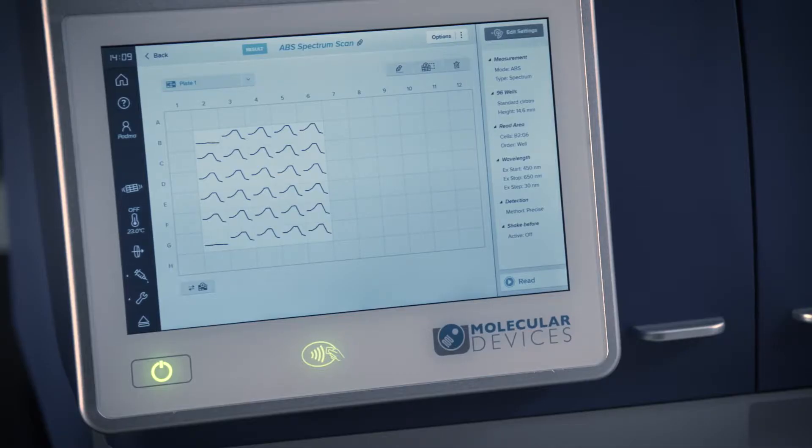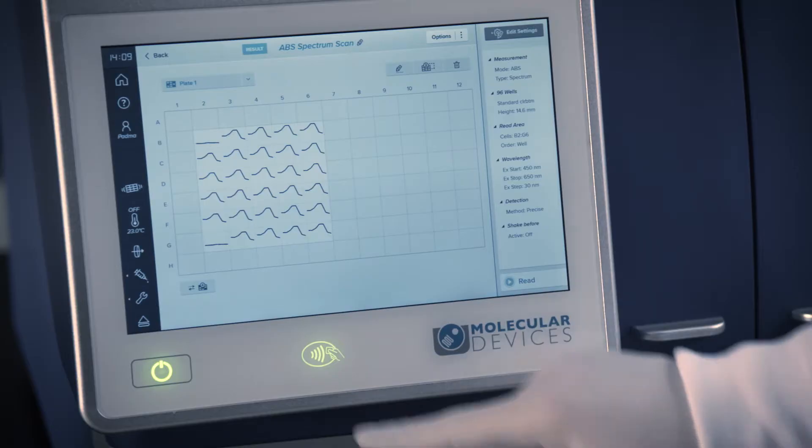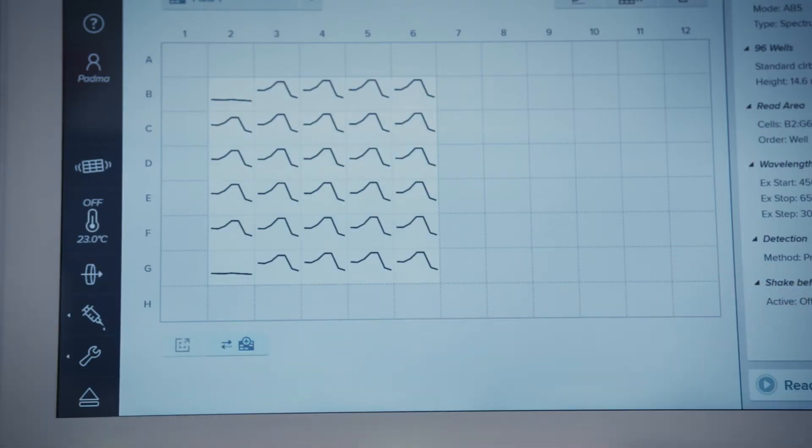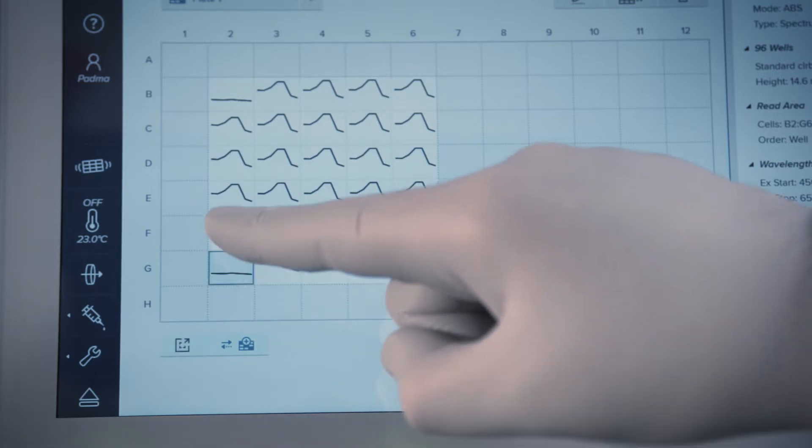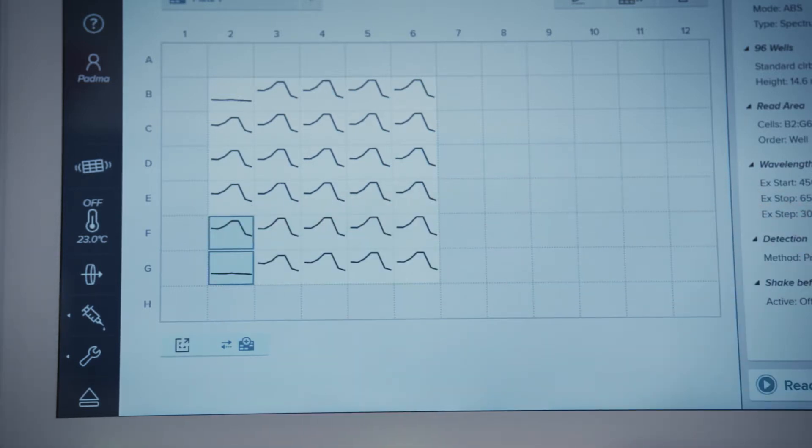To compare the results in several wells, touch the Compare Wells icon. The icon spins and an additional display icon appears. Touch each well you wish to compare. Each well you select displays a shaded background. Touch the display icon to display the well comparison.